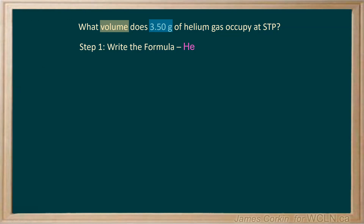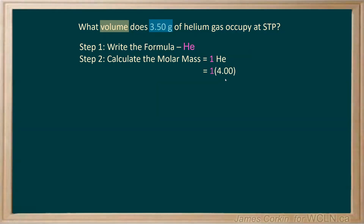This one's pretty simple. Helium gas is a noble gas and is just He. And you're going to need the molar mass, because you're going to need to convert from grams to moles. One He atom would have a molar mass of 4.00 grams per mole.